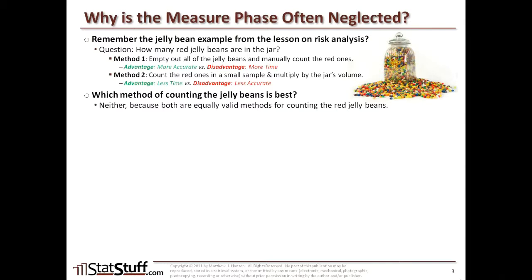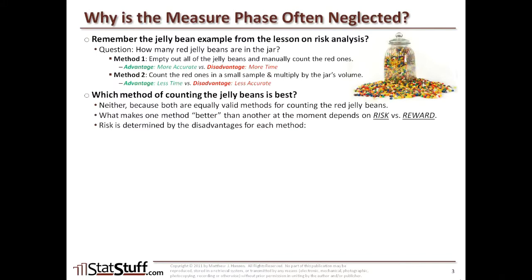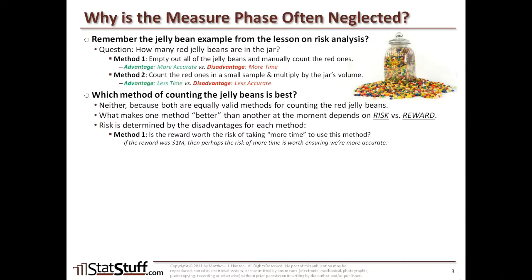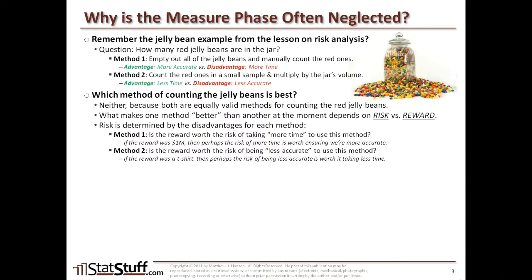It really doesn't come down to one method being better than the other, because they're both equally valid methods for counting red jelly beans. What makes one method better than the other depends on how the risk and rewards are balanced between the two. Risk is determined by the disadvantages of each method. For the first method, the question is: is the reward worth the risk of taking more time? If the reward is something like a million dollars, then perhaps the risk of more time is worth ensuring accuracy. For the second method, if the reward is only a t-shirt, then perhaps the risk of being less accurate is worth taking less time.